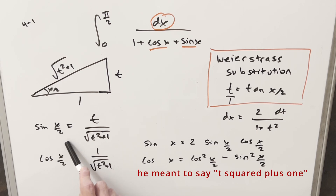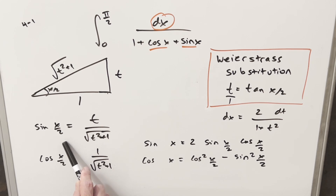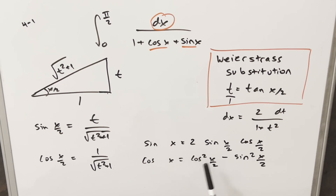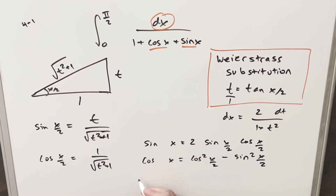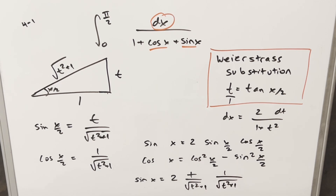The only trouble is we have formulas in terms of half angles and we want to get back to the full angle. We want cosine x and sine x, not half-angle formulas. So we use the double angle formula, substituting x/2 for x so the angle becomes x instead of 2x. For sine of x: two times sine(x/2) times cosine(x/2) gives us two times t over square root of t squared plus one times one over square root of t squared plus one, which simplifies to 2t over t squared plus one.